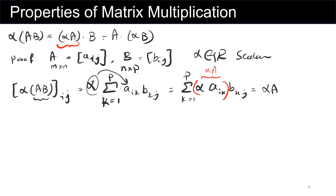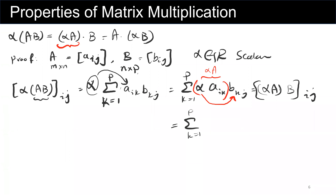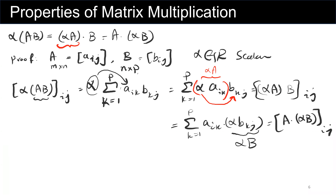With the same approach, we can bring alpha to the B side. This gives sigma k from 1 to p of A_ik times alpha B_kj, which is nothing but A multiplied by (alpha B) at element ij. The proof is complete: alpha times AB equals alpha A times B, which also equals A times alpha B.